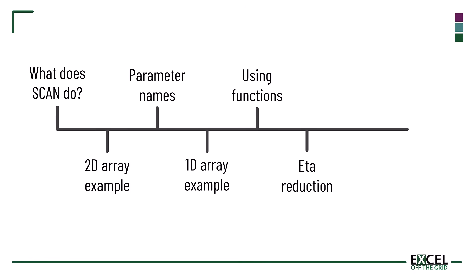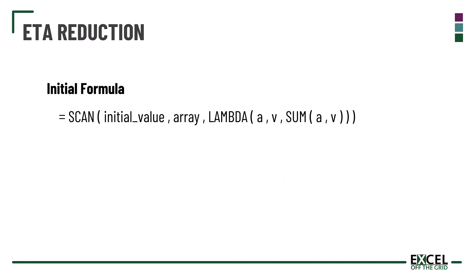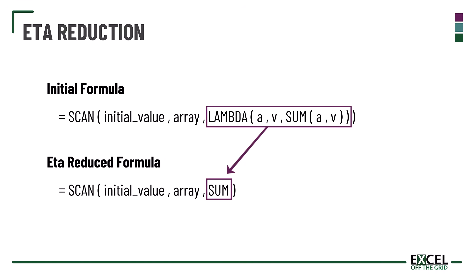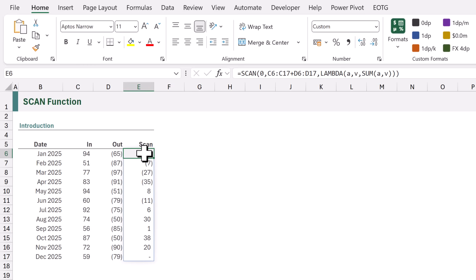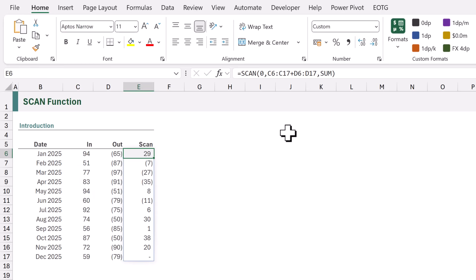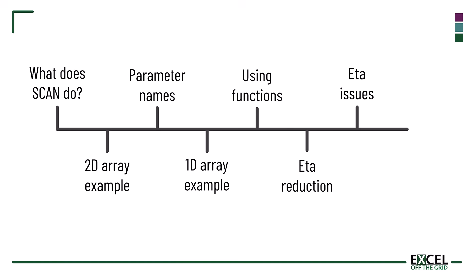SCAN passes two values into the LAMBDA function: the first is the previous result and the second is the current value. If we have a simple function that also accepts two arguments, we can use eta reduction. This is where Excel assumes the first argument passed into the function is the previous result or accumulator and the second is the current value. Instead of declaring the LAMBDA with variables and the function, we can simply use the function name without any arguments and without any brackets. Let's edit our formula and replace the entire LAMBDA syntax with just sum.